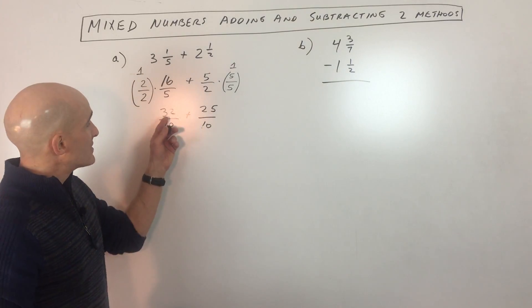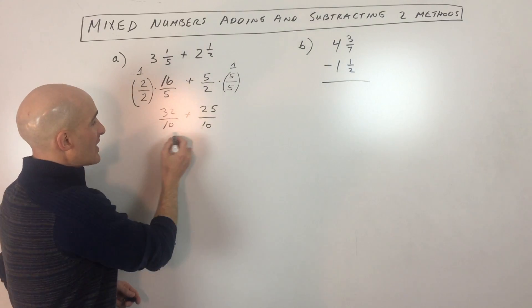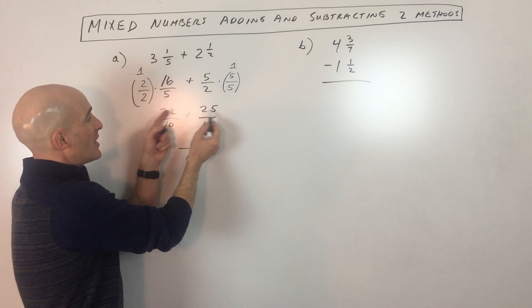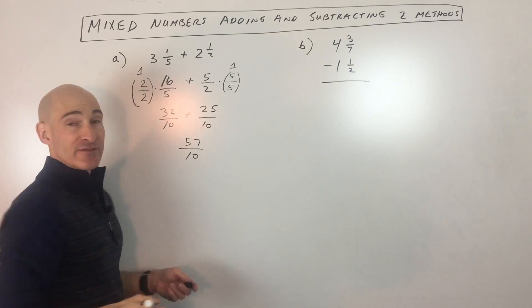So all we have to do now is combine these two fractions together. These are going to be all over 10. And 32 plus 25 is how much? It's 57. So we have 57 tenths.